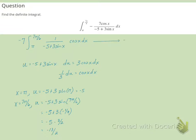So when we now substitute everything in, we'll have negative 7 times the integral from negative 5 to negative 13 halves of 1 over u times 1 third du.